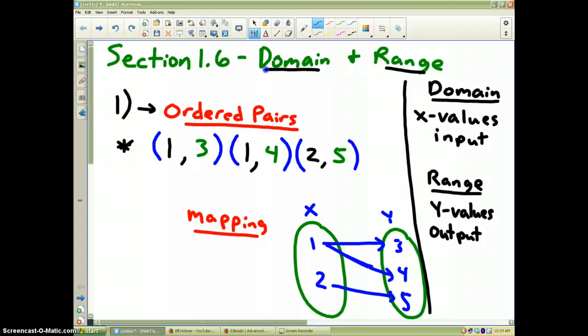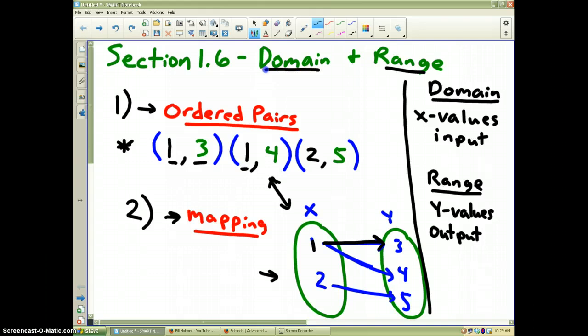That same set of information can be represented by what is called a mapping. A mapping looks like the diagram that I have drawn right here. This particular mapping is exactly the same as the set of ordered pairs. If you notice, I have the ordered pair (1,3), and over here I have the number 1 has an arrow drawn to the y value of 3. I have the second ordered pair is 1 for x and it has a y value of 4, so it has the arrow drawn to the 4. And then the third ordered pair is x is 2, and it's got an arrow to go to the number 5.